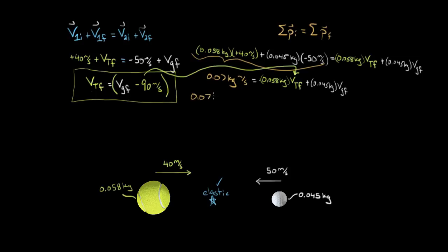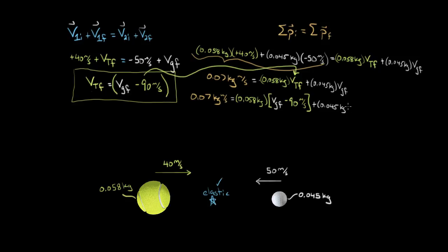So we have 0.07 kilogram meters per second equals 0.058 kilograms times the quantity vg final minus 90 meters per second, plus 0.045 kilograms times vg final. You might feel this isn't easy, but the reason it is easier is that the equations we're plugging into each other are much simpler than the kinetic energy formula. We do not have to plug conservation of momentum into conservation of energy, which would square the substituted term and make the algebra a lot worse.